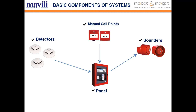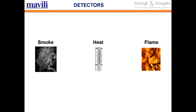The basic components of a fire detection system are detectors, manual call points, sounders, and panels. Basic fire effects such as smoke, heat, and flame occur as a result of fire. Detectors are produced with features that detect one or more of these effects. The order in which these effects form during a fire may vary depending on the characteristics of the flammable materials in the area.